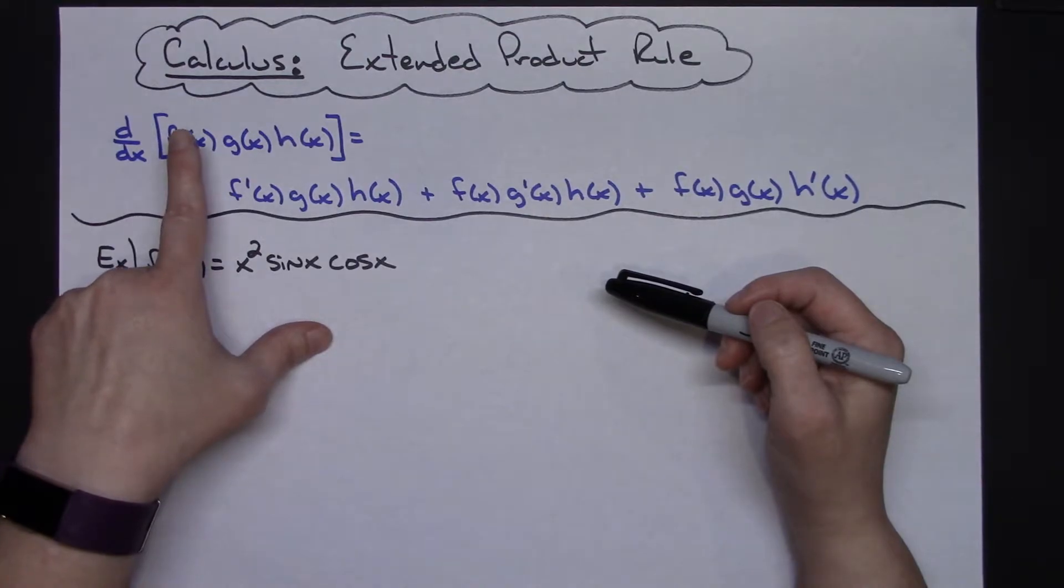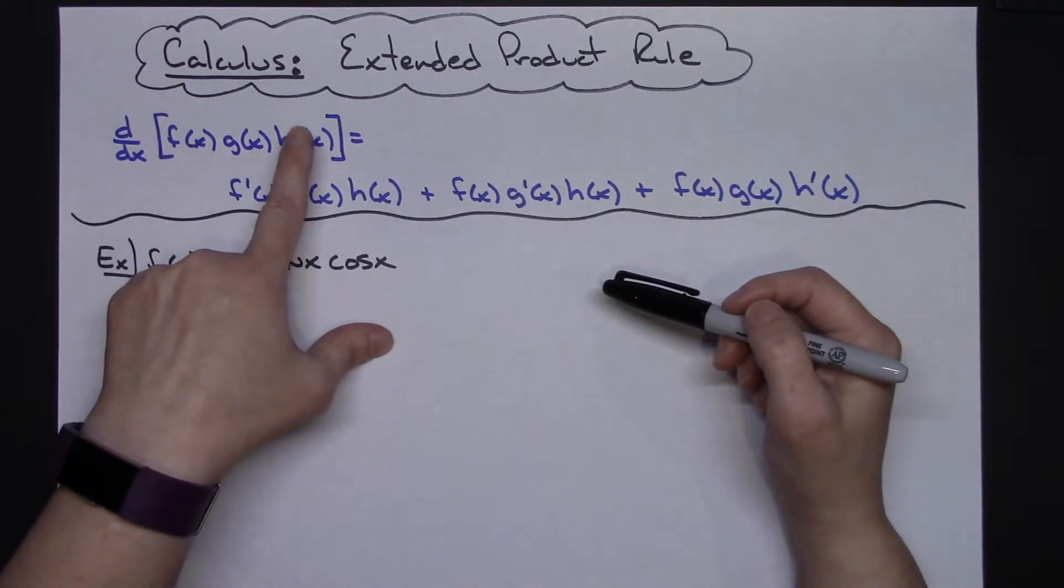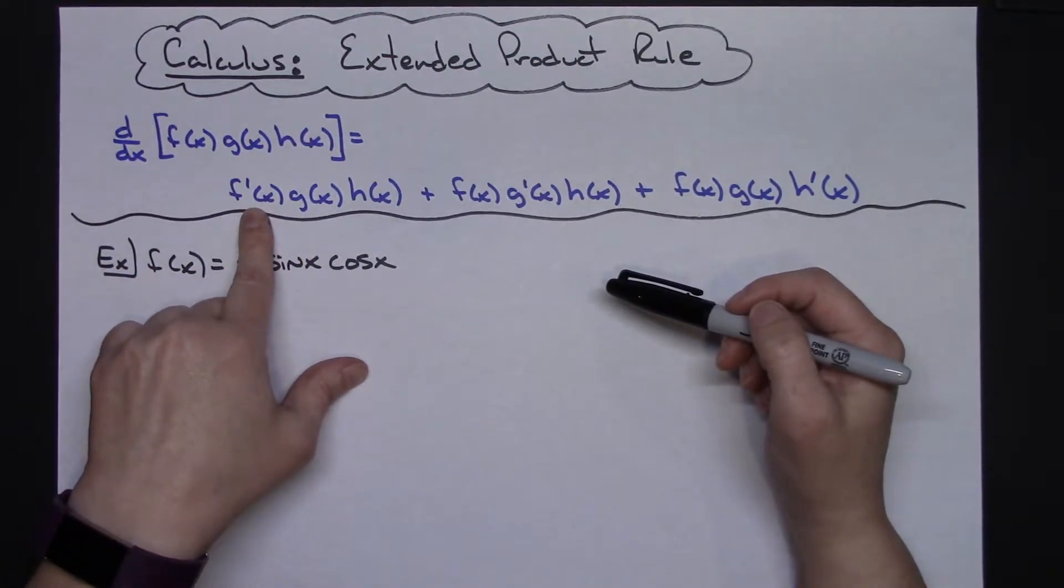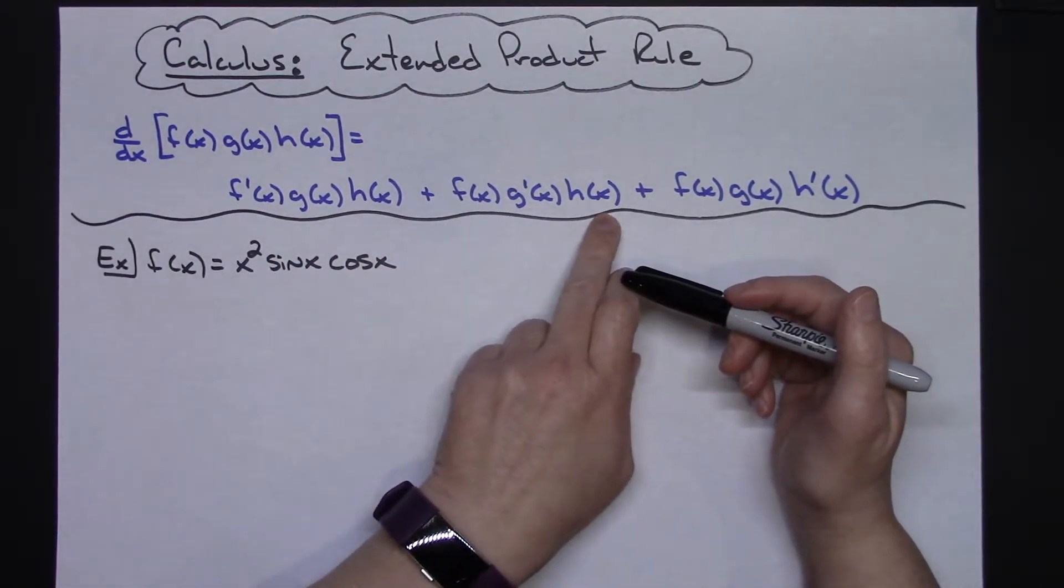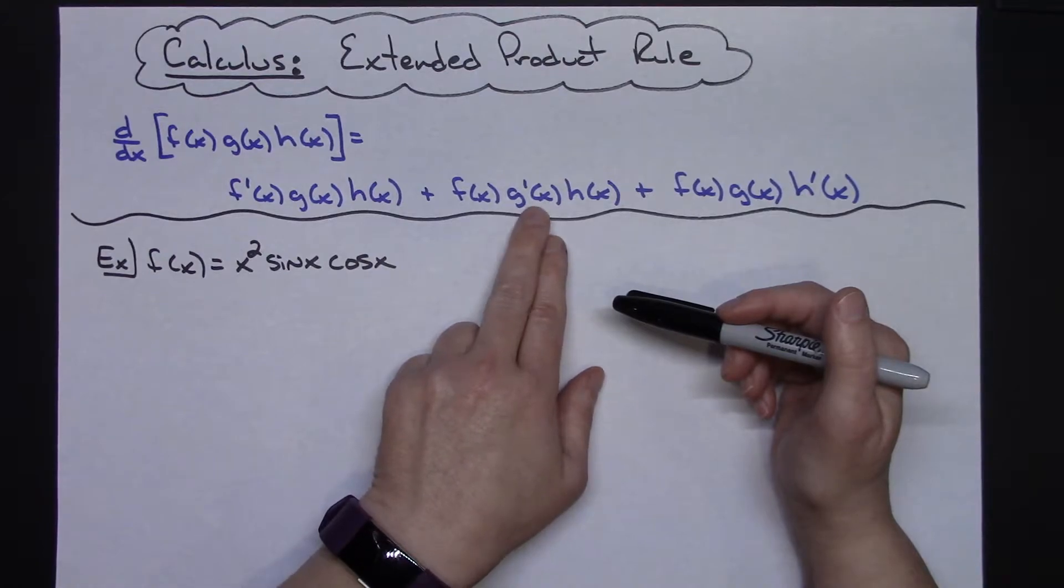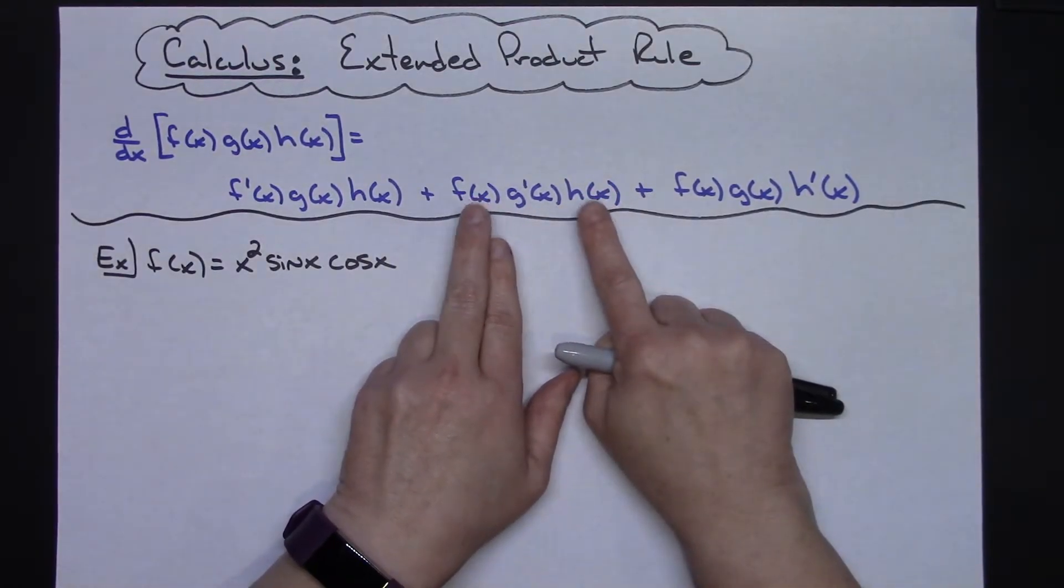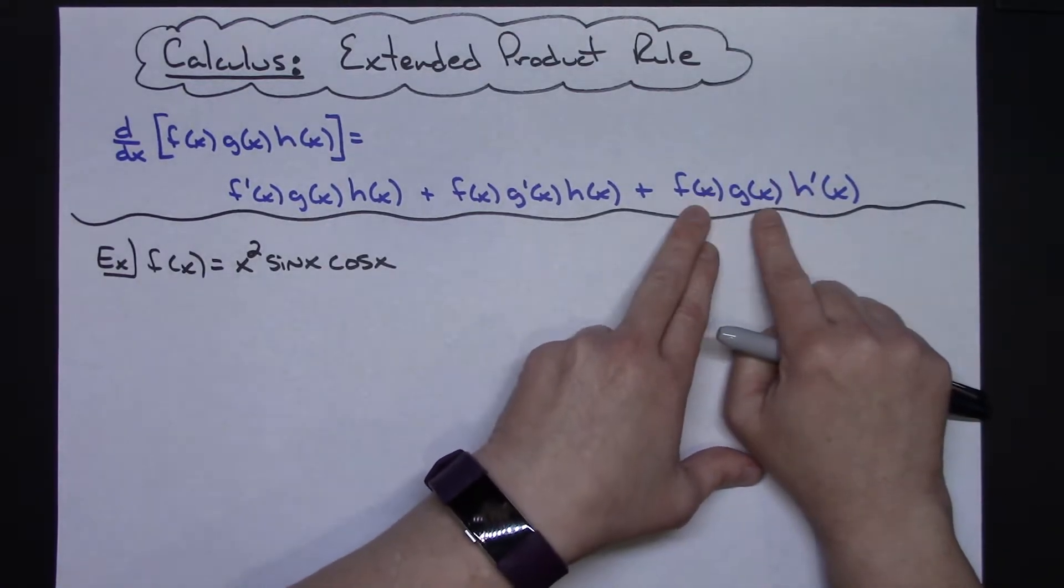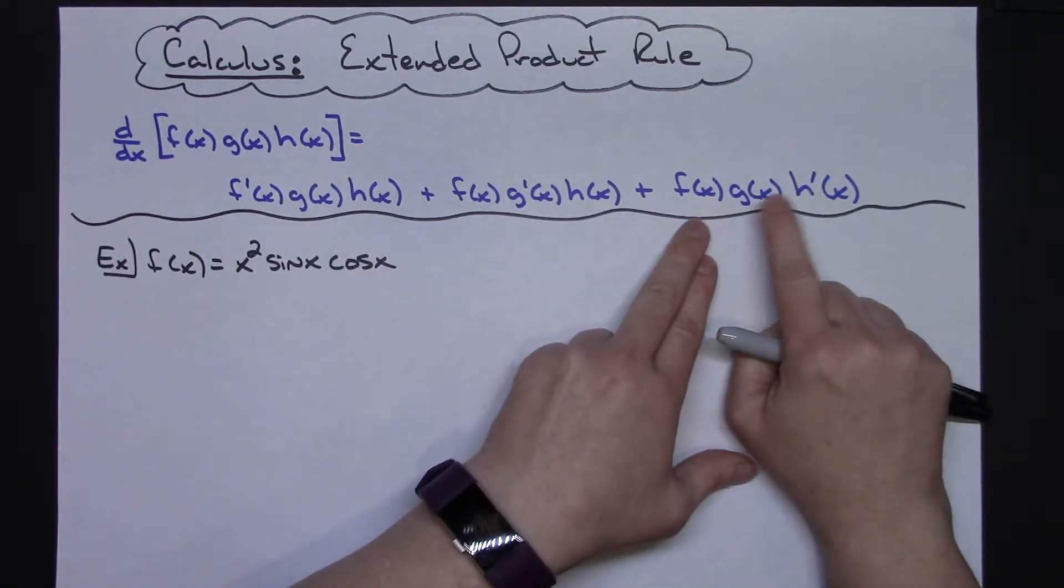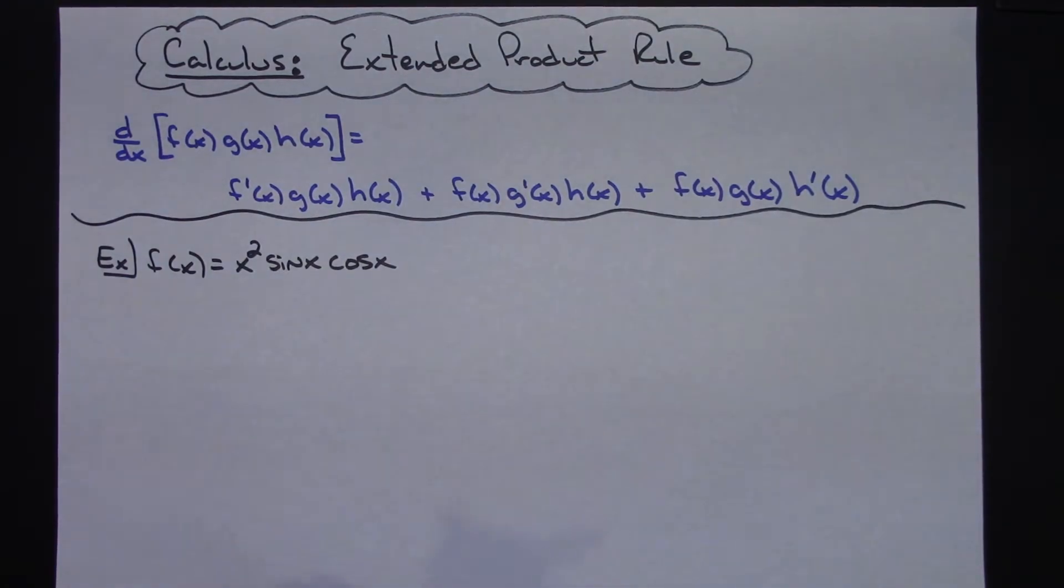I always do it systematically in order, so in the first set of products f(x)g(x)h(x) I take the derivative of f(x) and I leave the other two functions alone. Then in the middle product I take the derivative of the g function leaving the other two functions alone, and in my last product I take the derivative of the h function and I leave the other two functions alone.